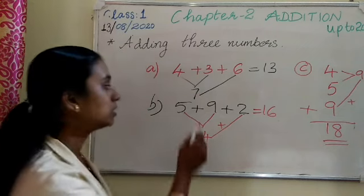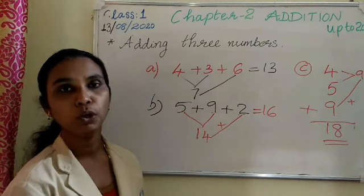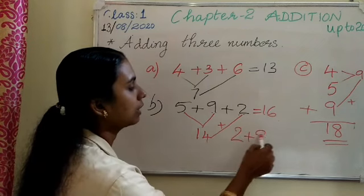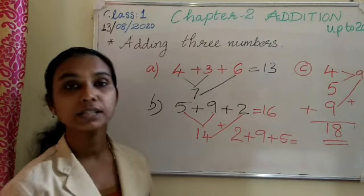And you have to follow only one method. That means you can change the order. The same number 5 plus 9 plus 2. You can change it. You can write 2 first. Then you can write 9. Then you can write 5.